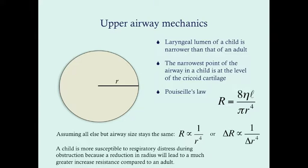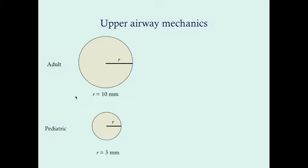A child is more susceptible to respiratory distress during obstruction because a reduction in radius leads to a much greater increase in resistance compared to an adult. Let's put this in numerical terms. An average adult trachea at its narrowest point has roughly a 10-millimeter radius. A child's narrowest point — at the cricoid cartilage — is about 3 millimeters. In a disease state with 1 millimeter of edema, the adult's radius drops from 10 mm to 9 mm.